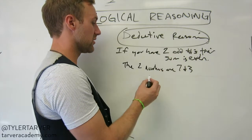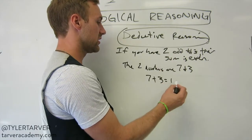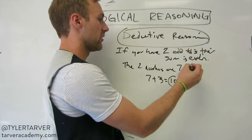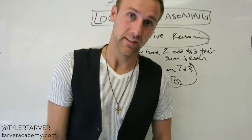Two numbers are seven and three. Those are two odd numbers. Seven plus three equals ten. Is ten an even number? Yeah. Every day of the week almost. That's correct.